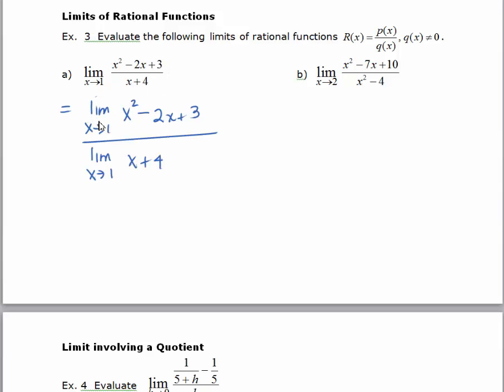Remember that the limit of a quotient is the quotient of the limits, but in the end, we just need to evaluate the numerator and the denominator at 1. So we get 1 squared minus 2 times 1 plus 3 all over 1 plus 4. And the limit is equal to 2 thirds. I added this extra step to show that the property was being used. You can actually go right in and evaluate.